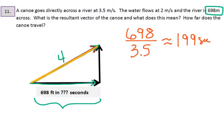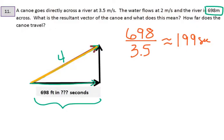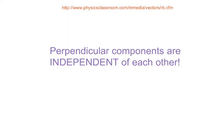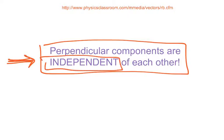These two components — the canoe's eastward motion and the current's northward push — are perpendicular components, and perpendicular components are independent of each other. That's the key point in your notes. It doesn't matter how fast or how strong the current is pushing; it will still take the same amount of time to cross the river. The only question is how much water the canoe covers in that same amount of time.